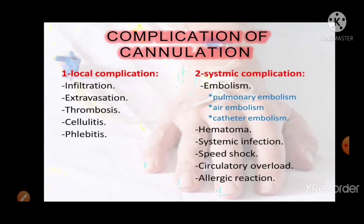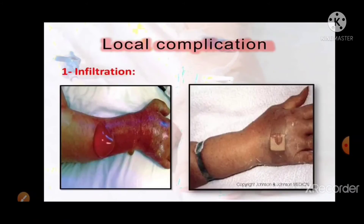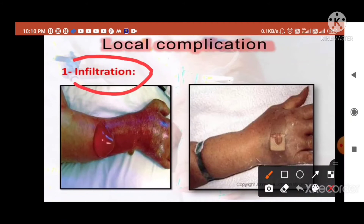Complications of cannulation are divided into local and systemic categories. Local complications include infiltration, extravasation, thrombosis, cellulitis, and phlebitis. Systemic complications include pulmonary embolism, air embolism, catheter embolism, hematoma, systemic infections, speed shock, circulatory overload, and allergic reaction.